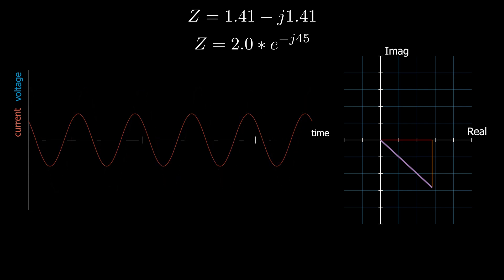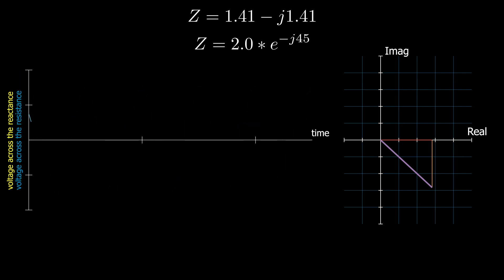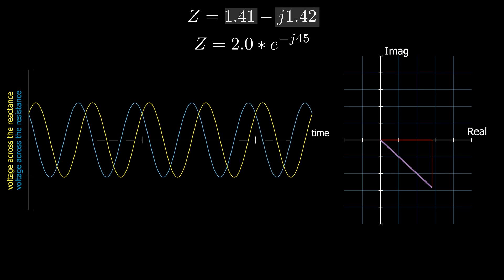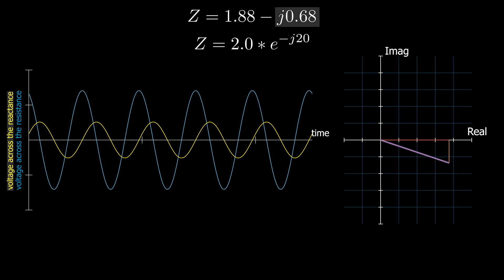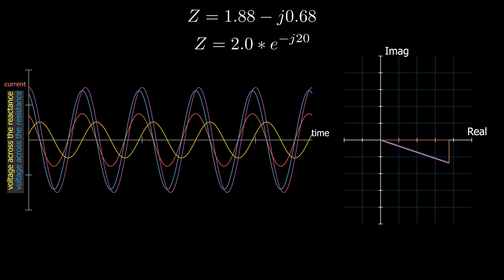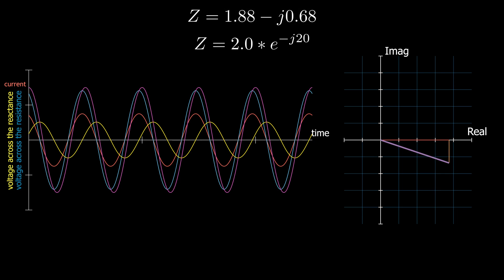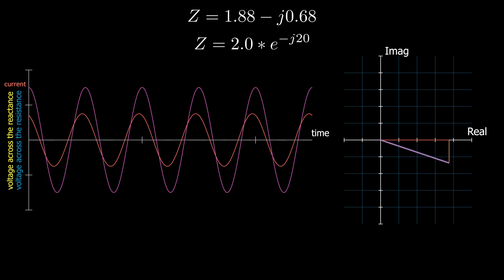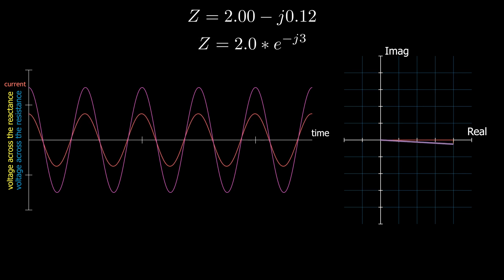Suppose we have a capacitive impedance. If we apply a sinusoidal voltage across it, the voltage is divided between the resistance and reactance based on their values. Not only that, the voltage across the reactance is lagging the voltage across the resistance by 90 degrees. At the same time, the current is in phase with the voltage across the resistance, and leads the reactance voltage by 90 degrees. The whole voltage across the impedance is the sum of the two voltages. That voltage can be considered as a complex quantity — the sum of real and imaginary components, the voltages across the resistance and reactance respectively. The imaginary voltage component is a voltage with 90 degrees of phase shift from the real one. From the graph, the voltage across the impedance is lagging the current by an angle determined by the impedance.